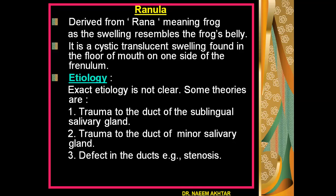Ranula is a term derived from the Latin word 'rana' meaning frog, as the swelling of ranula resembles the frog's belly. It is a cystic translucent swelling usually found in the floor of the mouth on one side of the frenulum. The etiology is not clearly understood; theories include trauma to the duct of the sublingual salivary gland, trauma to the duct of a minor salivary gland, or a defect in the ducts of the salivary glands — either minor or major, for example the sublingual salivary gland — when stenosis of the duct leads to ranula formation.